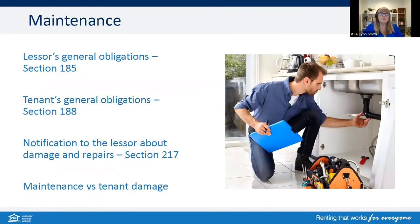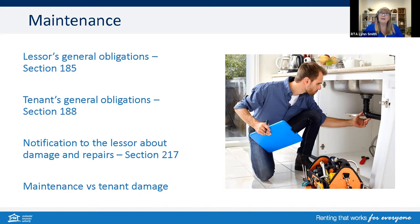Let's look at some of the key sections of the legislation on maintenance. The lessor's general obligations are under Section 185 — to ensure the premises are fit, clean to live in and in good repair, and that the owner is not in breach of any health or safety laws, and while the tenancy continues, to ensure repairs and maintenance issues are carried out. The tenant's general obligations fall under Section 188, and include keeping the premises and inclusions clean. Tenants also have an obligation to notify the owner or agent about any repairs, and to report any damage under Section 217.